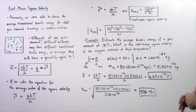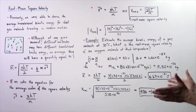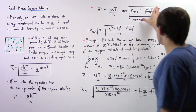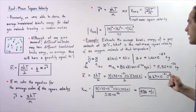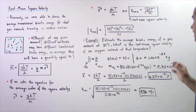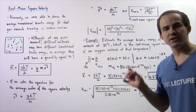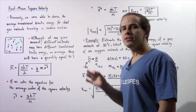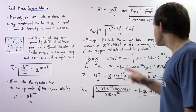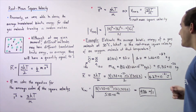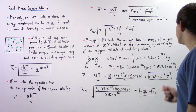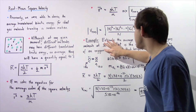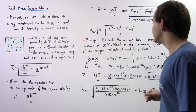Let's look at the following example using both equations. First, estimate the average kinetic energy of an ideal gas molecule at 30 degrees Celsius. Second, what is the root mean square velocity of an oxygen molecule at that same temperature?